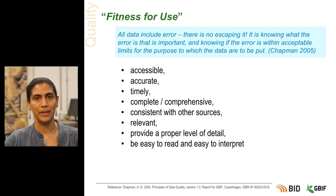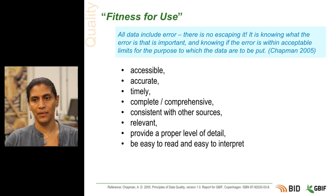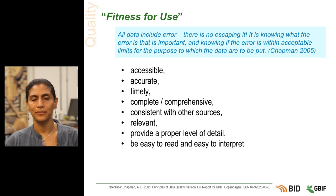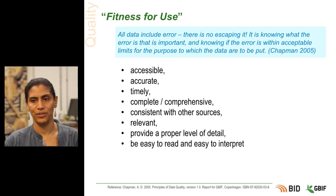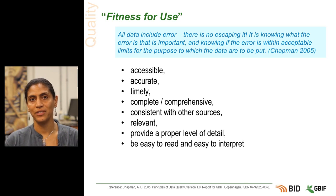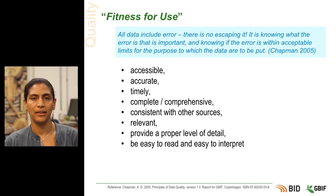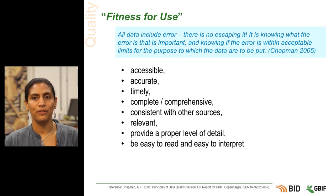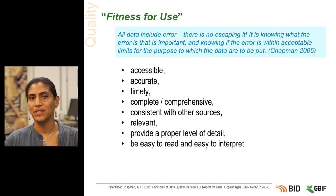Secondly, accuracy — can you trust the data? For example, are identifications by a trusted expert? Do georeferences contain datum information? Thirdly, timeliness — will the data be available soon enough for it to be of use? How often is it updated? How out of date has the data become? Fourthly, completeness and comprehensiveness — which parts of the data are fully fleshed out? It may be taxonomically comprehensive, but it may not be geographically comprehensive.